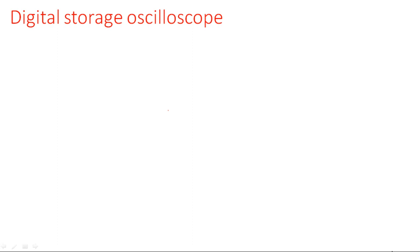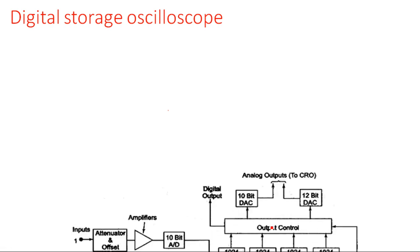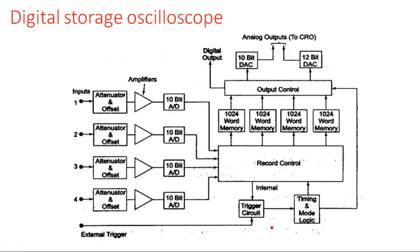To store the analog signal, we use an analog-to-digital converter. When retrieving the data from that memory location, we revert the information using a digital-to-analog converter if needed. Now let's look at the block diagram.